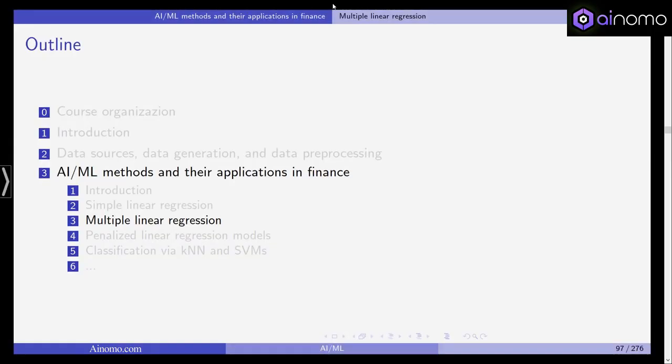Hello everyone and welcome back to our class in artificial intelligence and machine learning in finance. We are now at chapter 3.3 in which we want to discuss multiple linear regression. We've seen in the previous videos simple linear regression in which we use a simple line to predict a response variable based on one predictor.